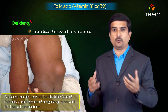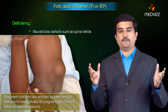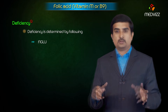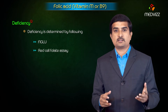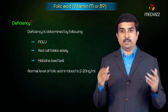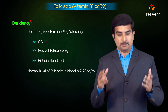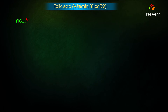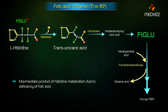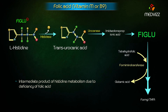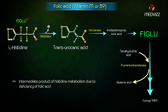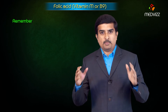This is why pregnant mothers are advised to take 5 milligrams of folic acid in the early phase of pregnancy, especially to prevent fetal neural tube defects. Deficiency is determined by FIGLU (an intermediate product of histidine metabolism), red cell folate assessment, and the histidine load test. Normal blood levels of folic acid are 2 to 20 nanograms per mL.